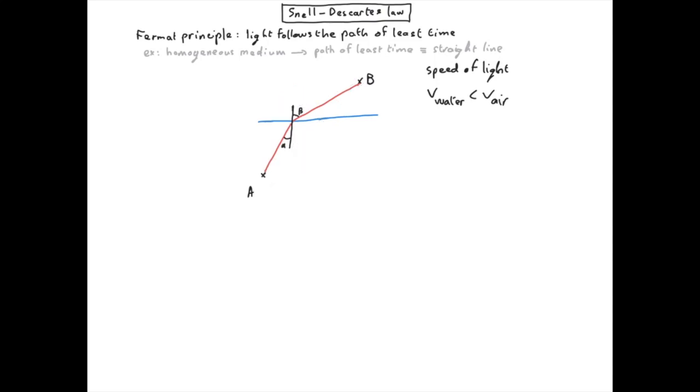First, we define some distances. The total time for the path is the sum of the time spent in water plus the time spent in the air.